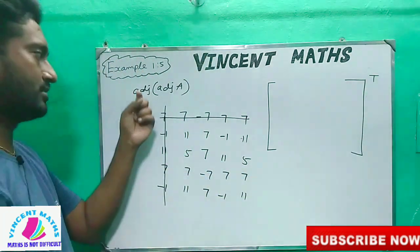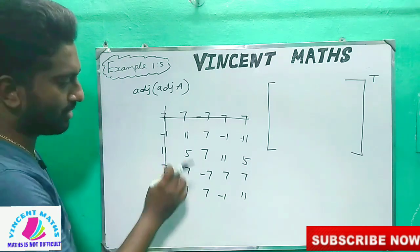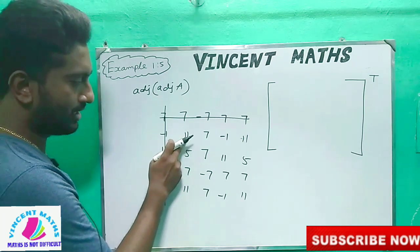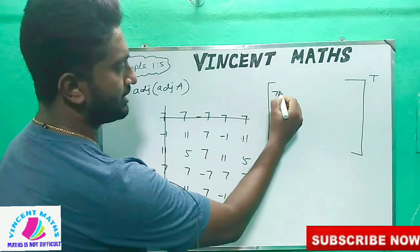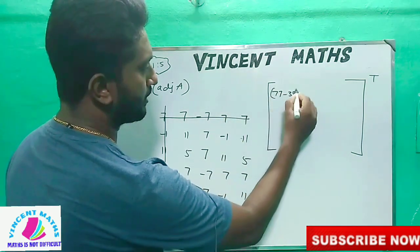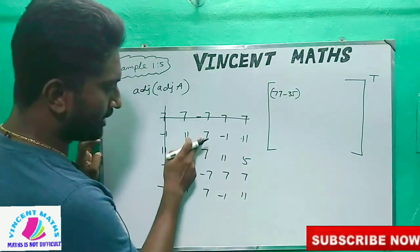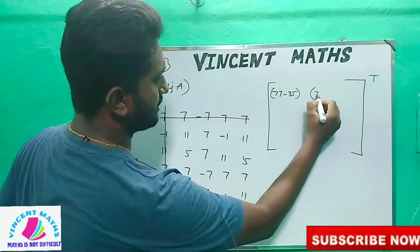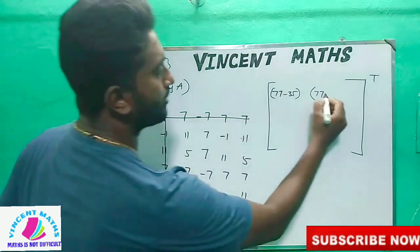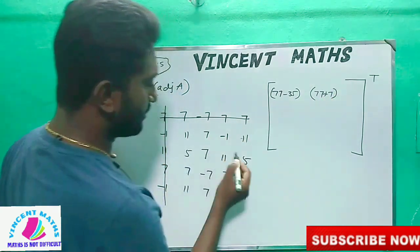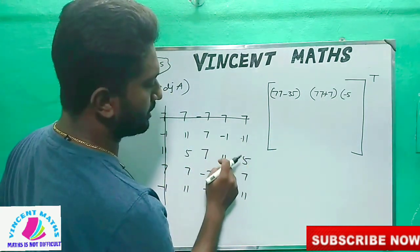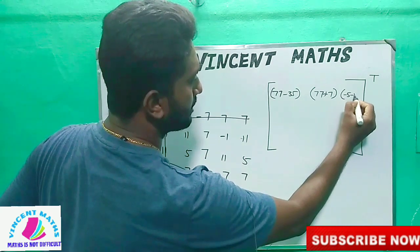How do we do this? We will enter two rows and expand. That is: 11 into 7 equals 77. Next, we will delete this row — minus 35. Next, delete this row: 7, 11, 7, 7. Delete this row — minus 7. Plus 7. Next, delete this row — minus 5. What do we do? Minus 21.